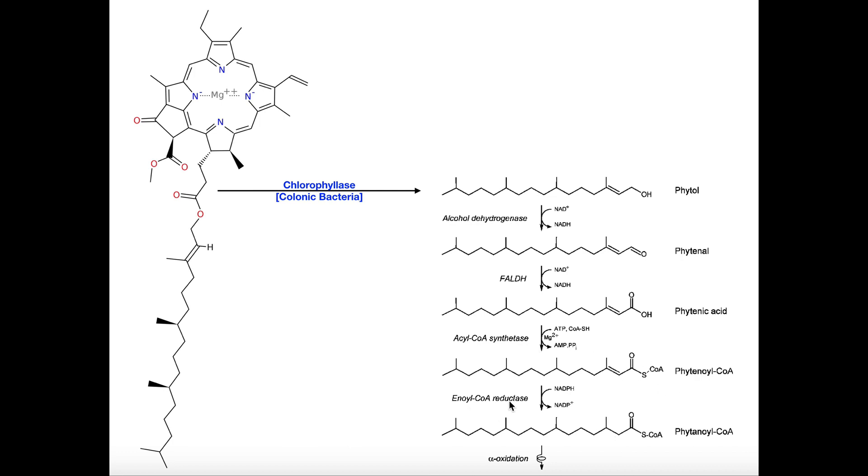And then this double bond right here will get reduced. That's done through an enoyl-CoA reductase. And that gets us to this molecule right here, which is called phytanoyl-CoA. Now this molecule will enter alpha oxidation, although we're still going to be localized in the peroxisome.